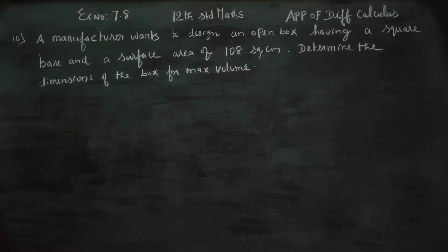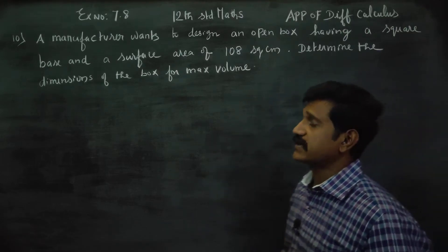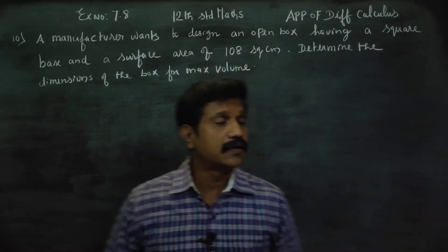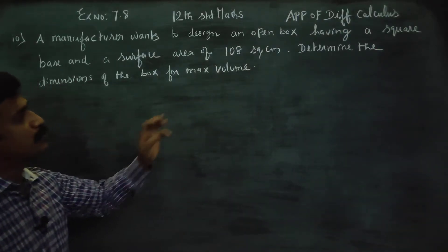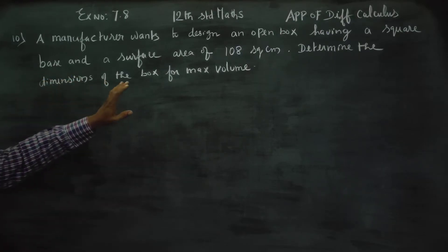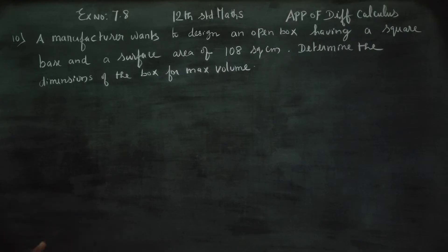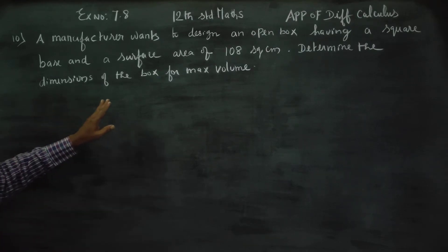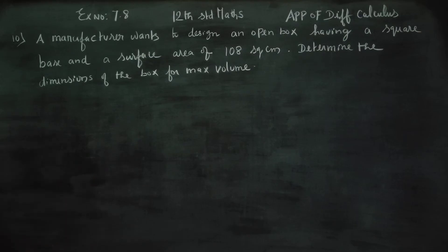Dear Twelfth Standard students, I am Etru Korunagaran. In exercise number 7.8, sum number 10: a manufacturer wants to design an open box having a square base and a surface area of 108 square centimeters. Determine the dimensions of the box for maximum volume.